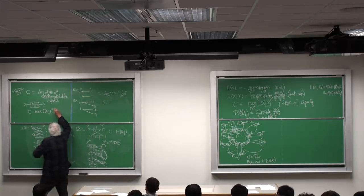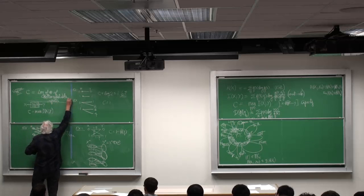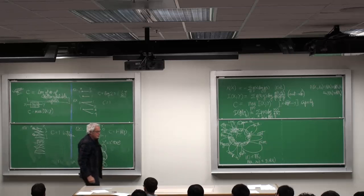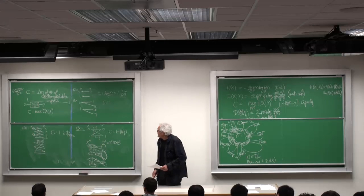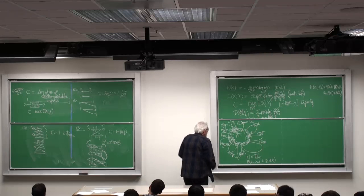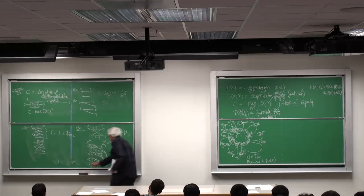My main point here is not all these examples but just that capacity is the log of the number of distinguishable inputs. Now what is entropy? Same trick. Let me erase some of that.